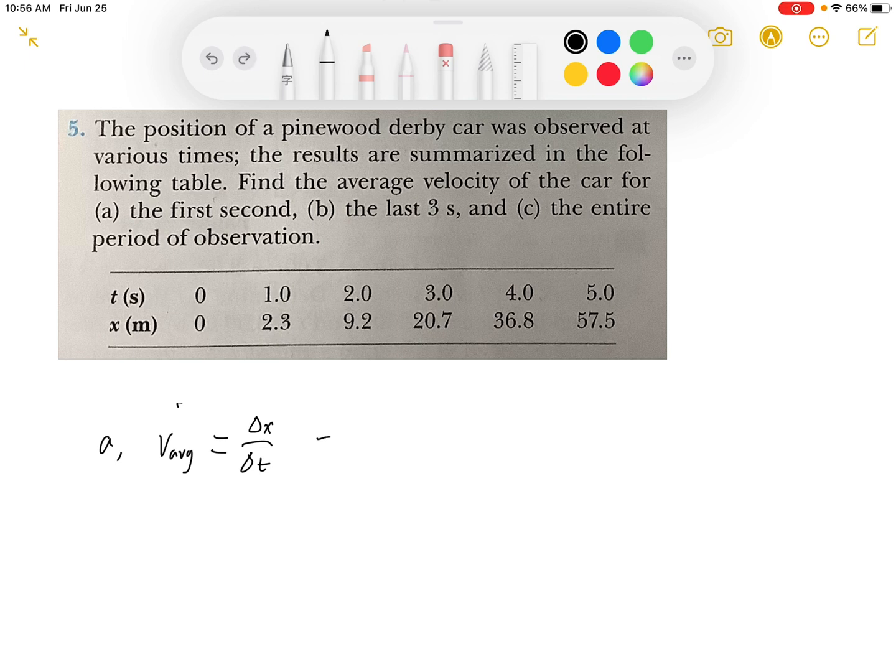For the first second, the final position is 2.3 and the initial position is 0. The final time is 1 and the initial time is 0. So we get an answer of 2.3 meters per second.